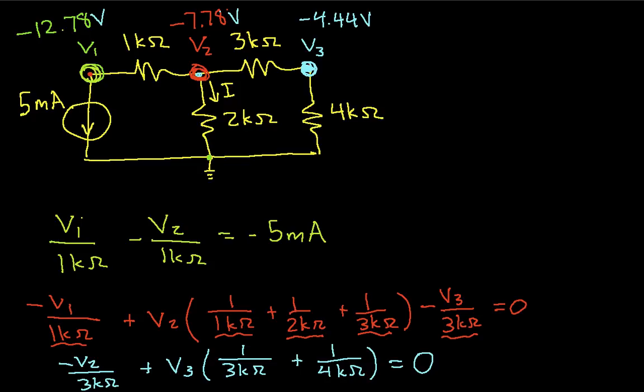Now, we also need to compute I. I is going to be minus 7.78 volts. That's the voltage at node 2 divided by 2K ohms. That's the resistance that this voltage is across. And when we work this out, we will have minus 3.89 milliamps, if I've done the math correctly.